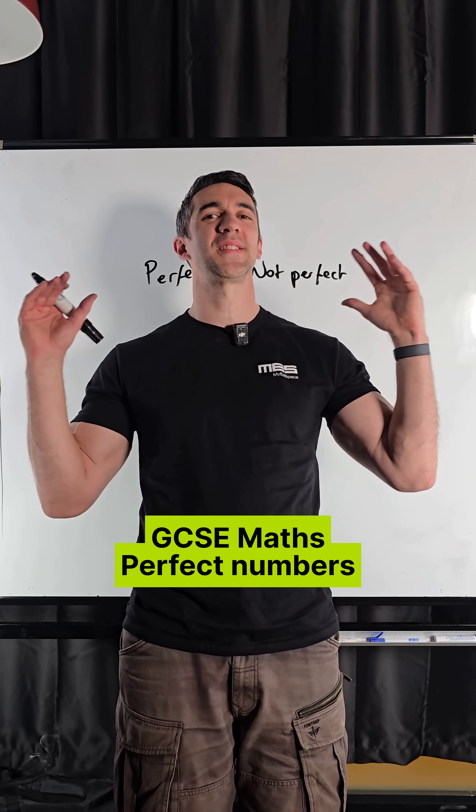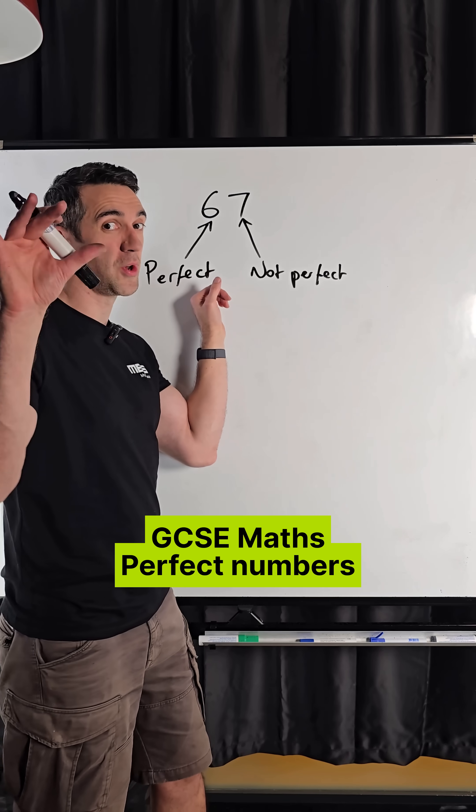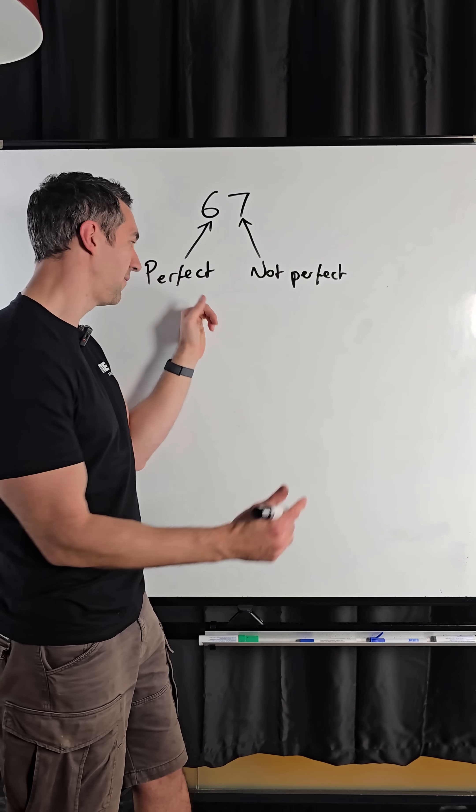Hey guys, I am here to explain to you why six and seven do not belong together. So six is something we call a perfect number in maths, and seven is most definitely not. So what do we mean by a perfect number?